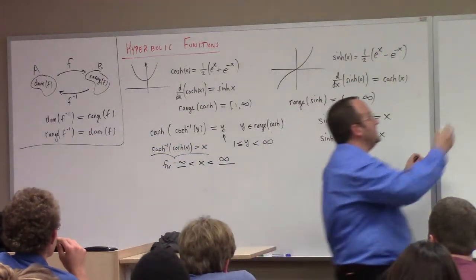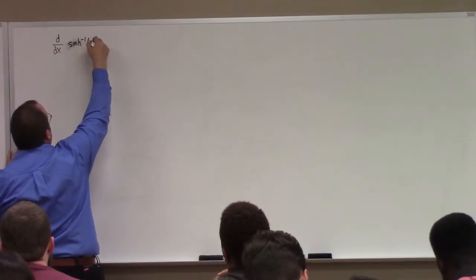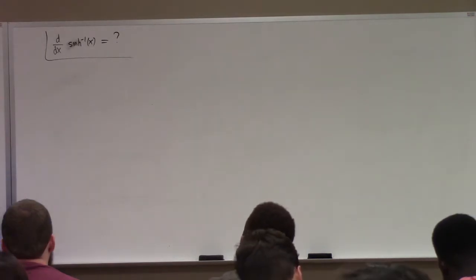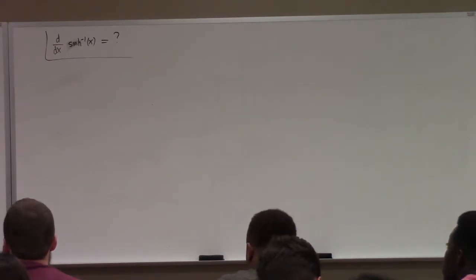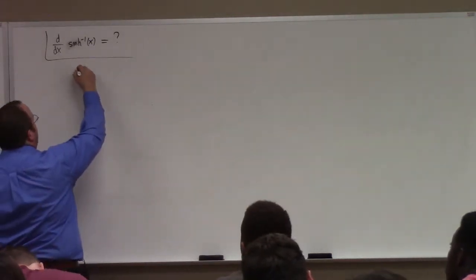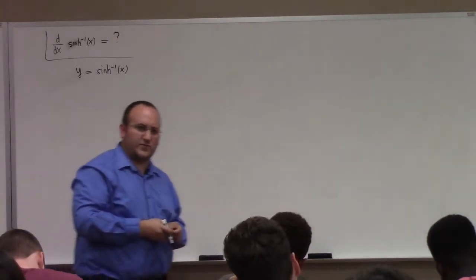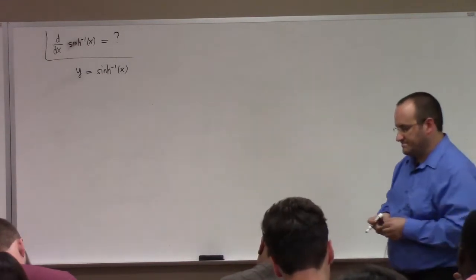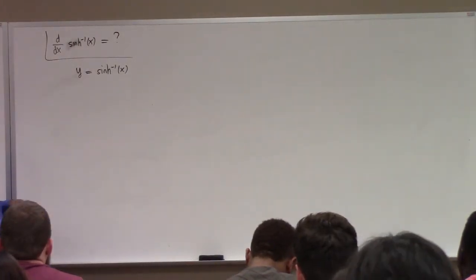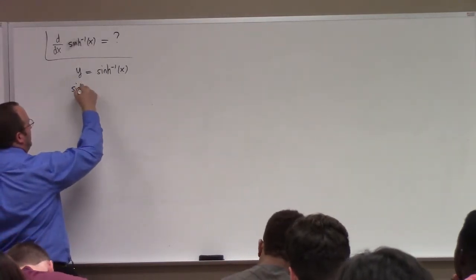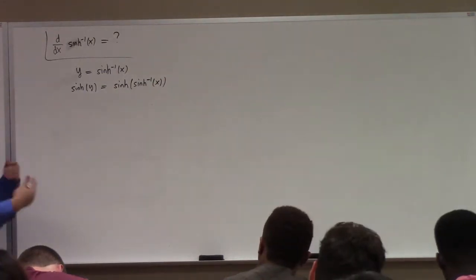So what's the derivative of inverse hyperbolic sine? Our procedure: call the thing you're trying to find the derivative of y. So y equals inverse hyperbolic sine of x. I do something your book doesn't do a lot — I explain why things are true. This tells us that sinh of y is equal to x.